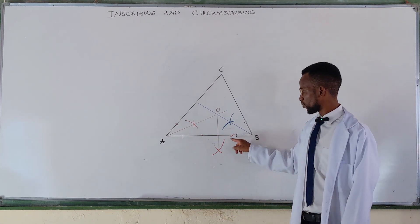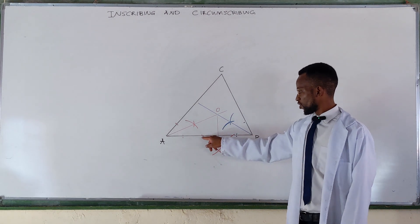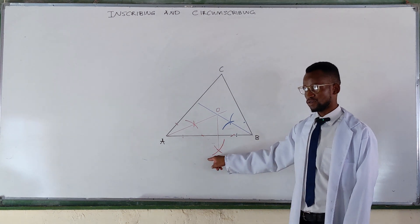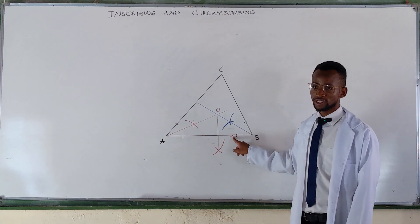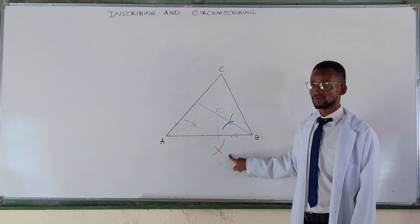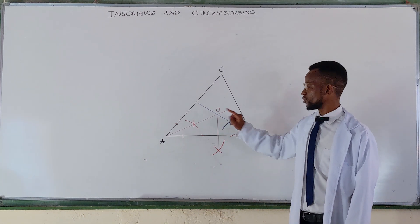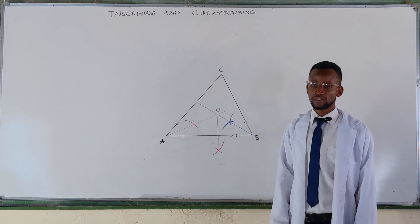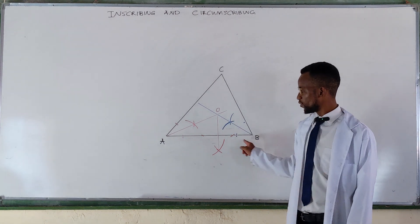After having these two points, point one and point two, you stand at point one, strike an arc like this one. Stand at point two without changing the radius, strike an arc there. And then join this point to that point with a straight line. So this line will meet with the baseline at some point there.